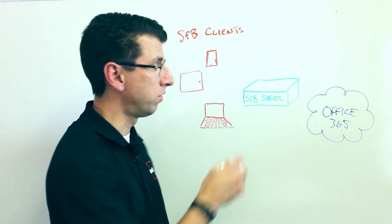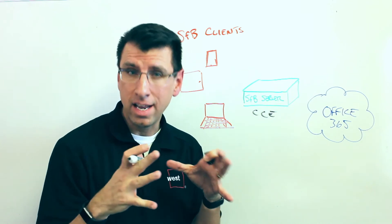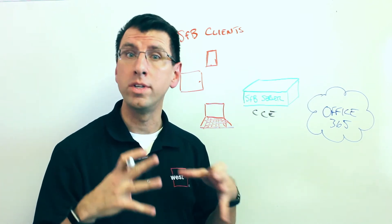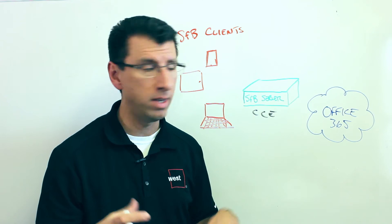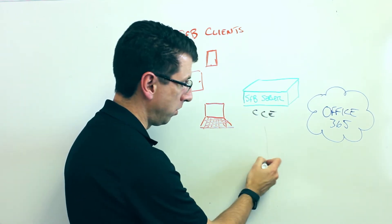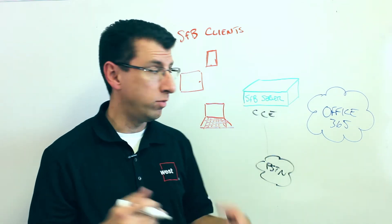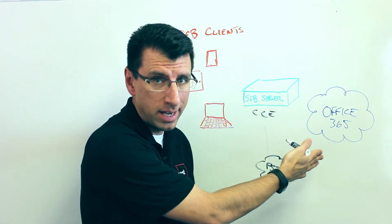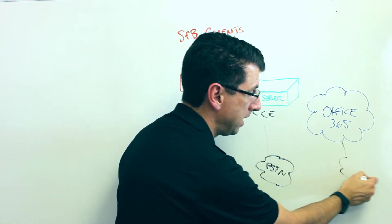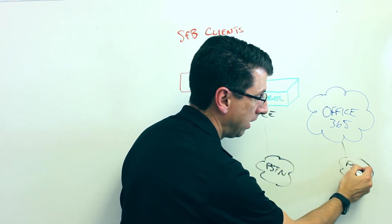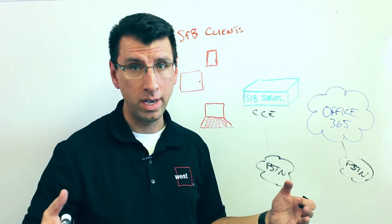There's a special version of this server called the Cloud Connector Edition — basically a slimmed-down version of the Skype for Business server that only supports the things needed to do PSTN connectivity, basically the public switched telephone network. That's really the only way you're going to get PSTN connectivity into Office 365 unless you use the built-in PSTN connectivity that Microsoft provides. That built-in connectivity is only available in the U.S. and the U.K. today.